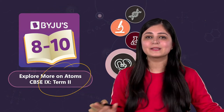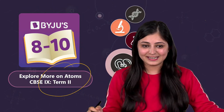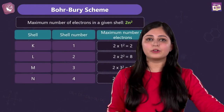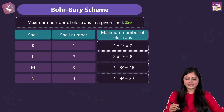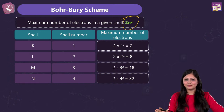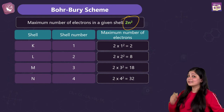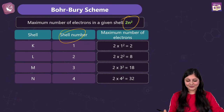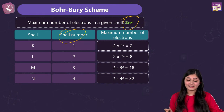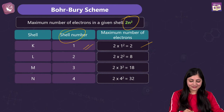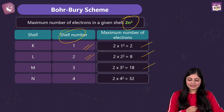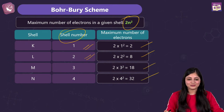Thank you — the setup is working absolutely fine now, really sorry for the delay. Without further delay, let's start the session by revising what we've already learned. Bohr's scheme states that the maximum number of electrons in a given shell is given by the formula 2n². So n is the shell number: for K shell n=1 giving 2, for L shell n=2 giving 8, for M you get 18, for N you get 32 electrons.